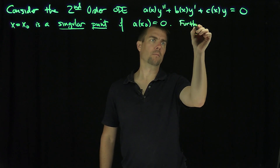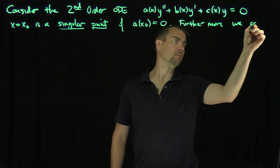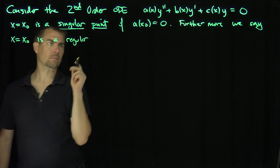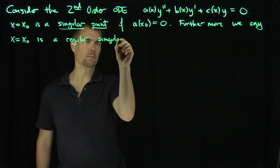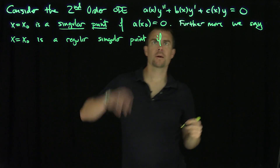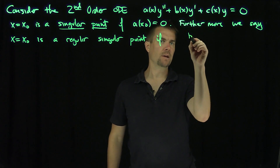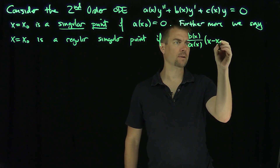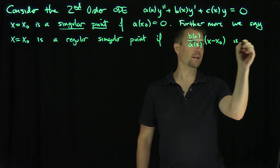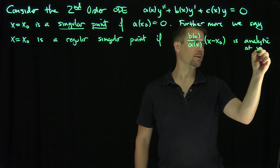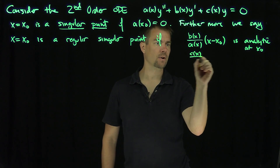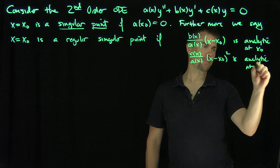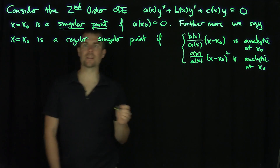Furthermore, we say x = x₀ is a regular singular point if, dividing everything by a(x), the coefficient b(x)/a(x) multiplied by (x - x₀) is analytic at x₀, and also c(x)/a(x) times (x - x₀)² is analytic at x₀. These two conditions are the conditions needed to be a regular singular point.